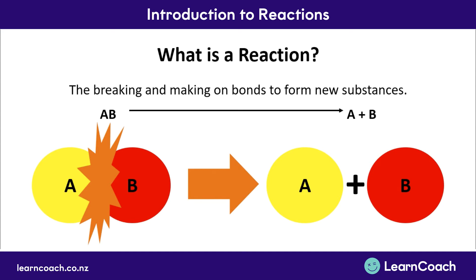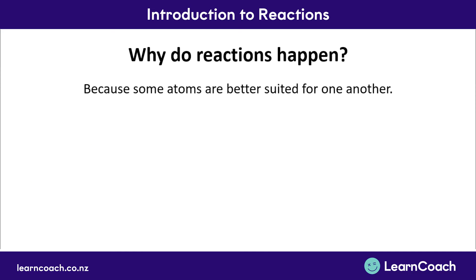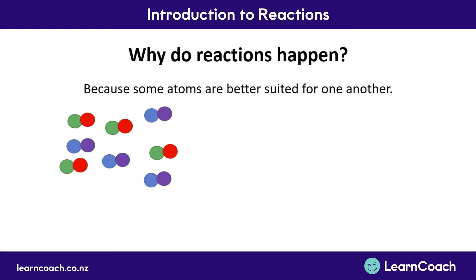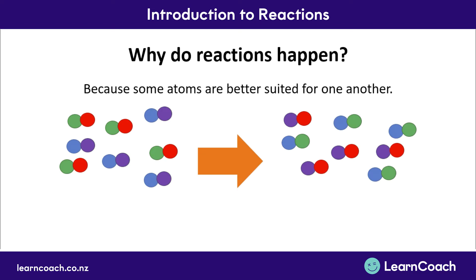Why do reactions happen? Reactions occur because some atoms are more active than others. These very active atoms are going to rearrange to be with other more active atoms. So if we have a compound of blue and purple, and we mix it with another compound of green and red, they will rearrange to form new compounds of purple and red, and green and blue, because the purple and red atoms are more active and better suited for one another.